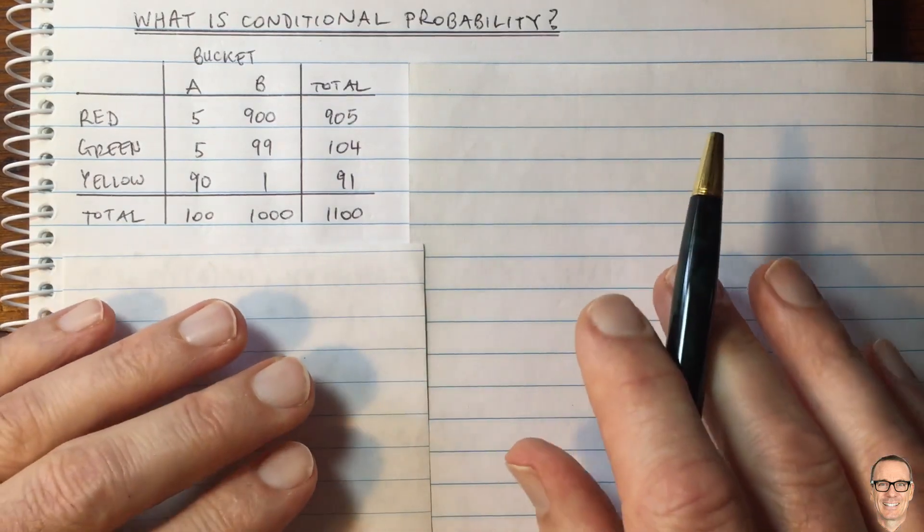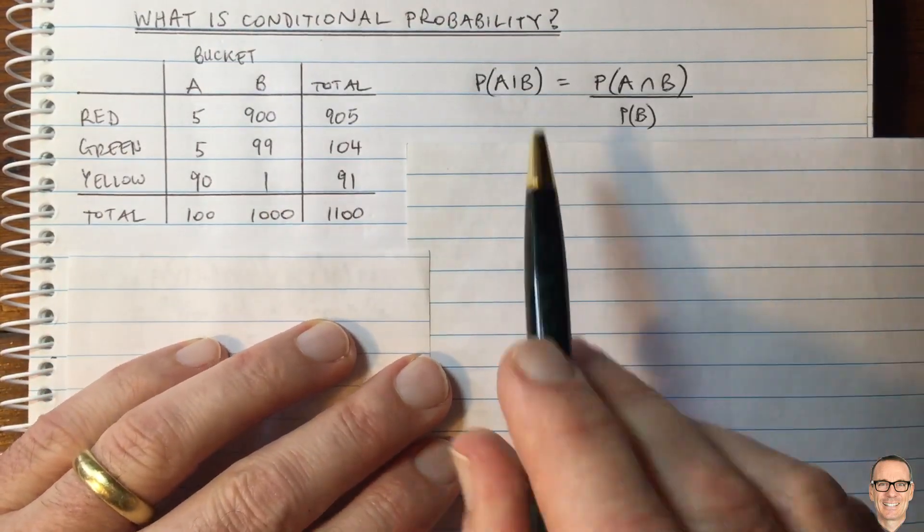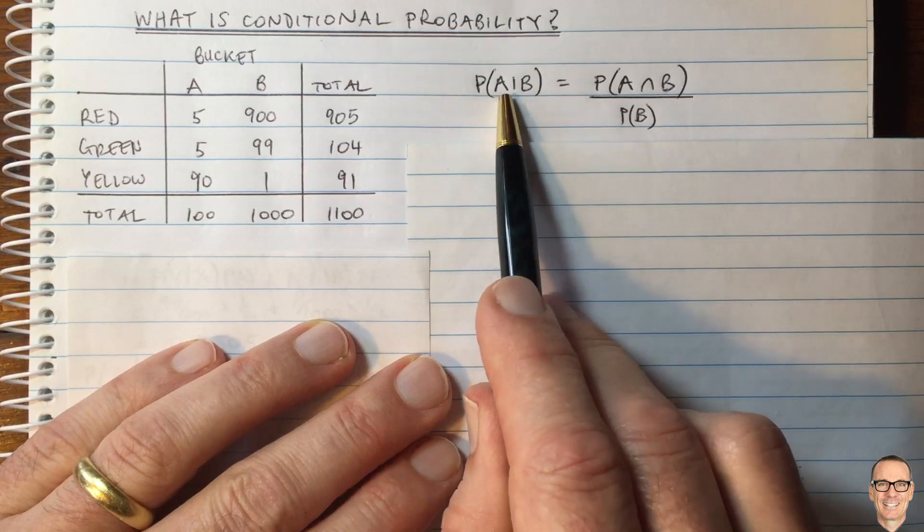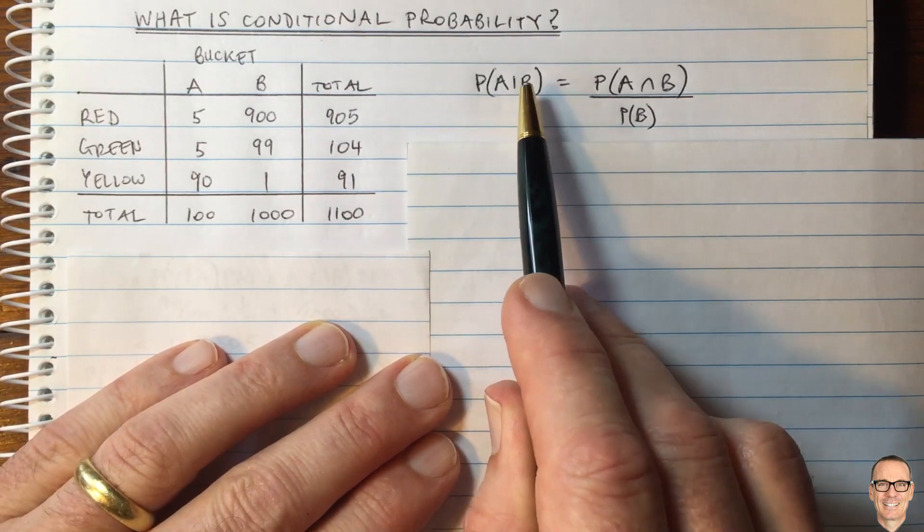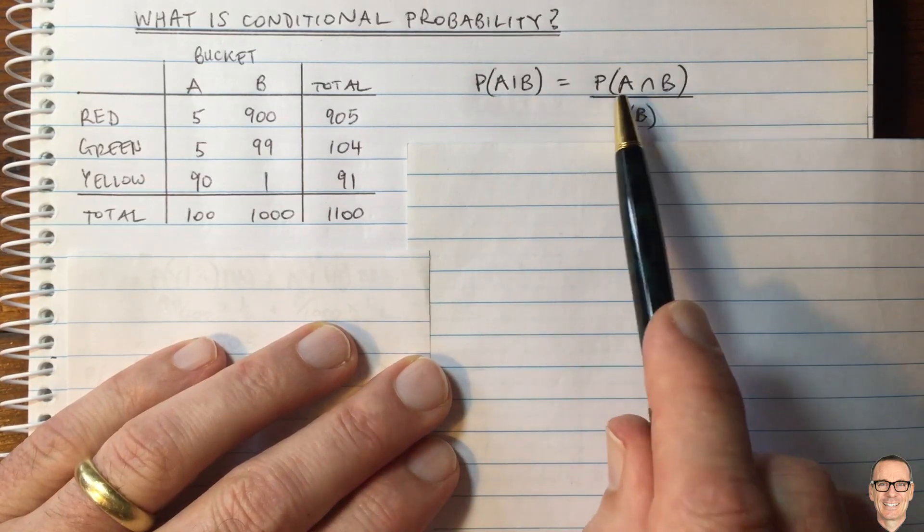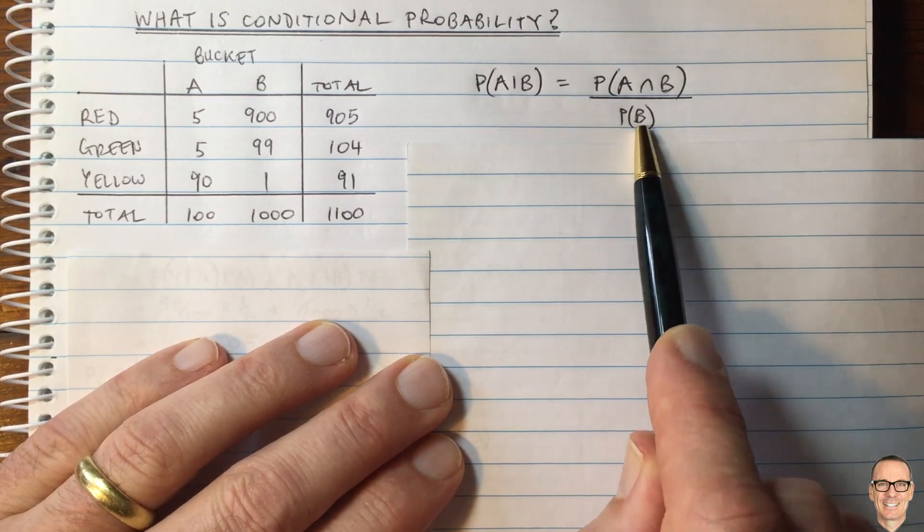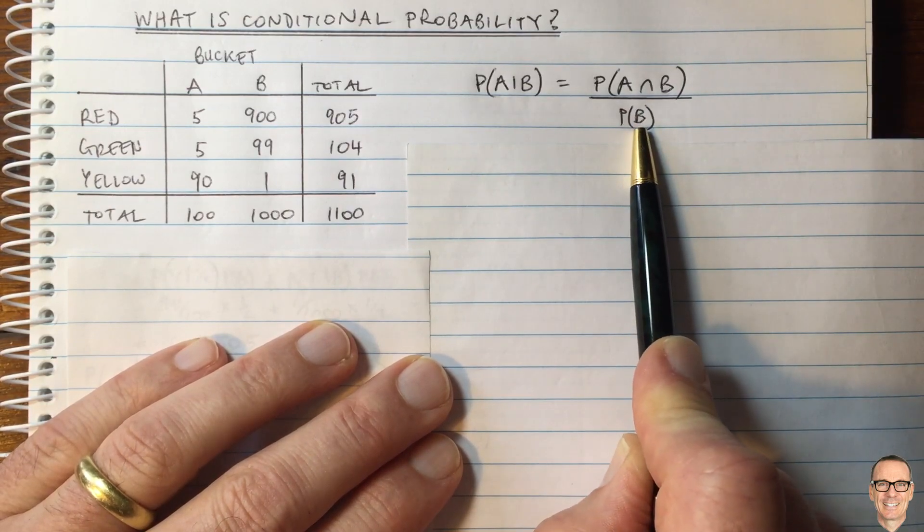Let's actually work it out exactly and see how we do that with conditional probability. Here's the definition of conditional probability. The probability that event A happens given that event B happens equals the probability that they both happen, the intersection, divided by the probability that event B happens.